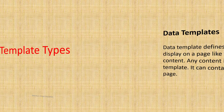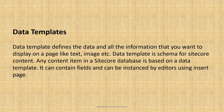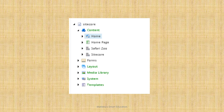There are various types of templates in Sitecore: the data template, branch template, command template, and paste template. The data template holds the data and all the information that we want to display on a page — for example, an image, some content, a header, or a footer. All these things we create in the data template.